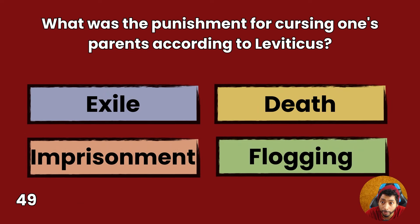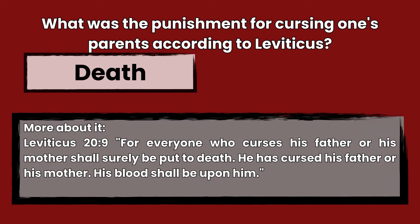Question 49: What was the punishment for cursing one's parents according to Leviticus? Exile, death, imprisonment, or flogging? Answer: Death. Leviticus 20:9 — For everyone who curses his father or his mother shall surely be put to death. He has cursed his father or his mother. His blood shall be upon him.